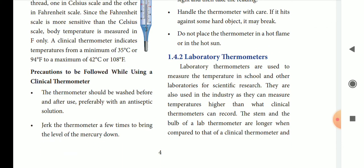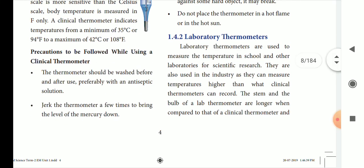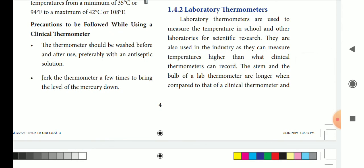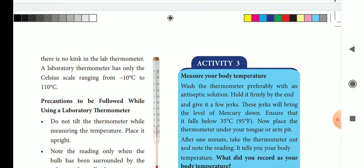Laboratory thermometer is used in the laboratory and industry. They can measure temperatures higher than what a clinical thermometer can measure. Clinical thermometer is used up to 42 degrees Celsius. The stem and bulb of a lab thermometer are longer compared to that of a clinical thermometer. There is no kink in the lab thermometer. The lab thermometer range is from minus 10 degrees Celsius to 100 or 110 degrees Celsius.